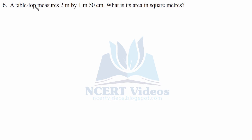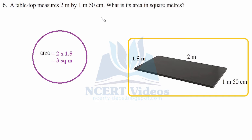Sixth question: a table top measures 2 meter by 1 meter 50 centimeter. What is its area in square meters? The units are not the same, so we convert 50 centimeter to 0.5 meter and add it to 1 to get 1.5 meter. Now multiply length into breadth: 2 into 1.5 gives 3 square meter.